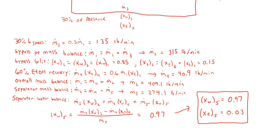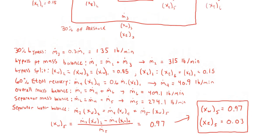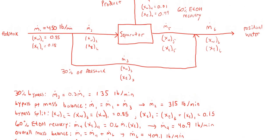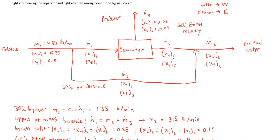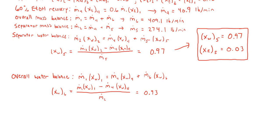Finally, to get the composition of the residual water stream after the bypass mixing point, I'm going to do a species balance on water around the entire process. Doing this, you'll find that after the mixing, it is 93% water. Since the mass fractions have to balance to 1, the final residual water stream leaving is 93% water and 7% ethanol.